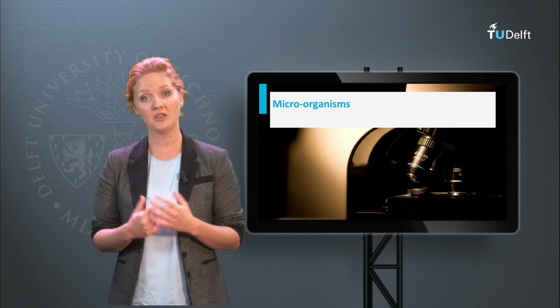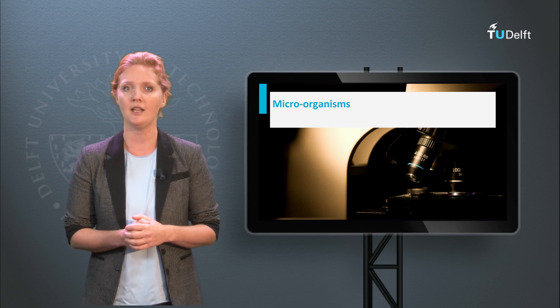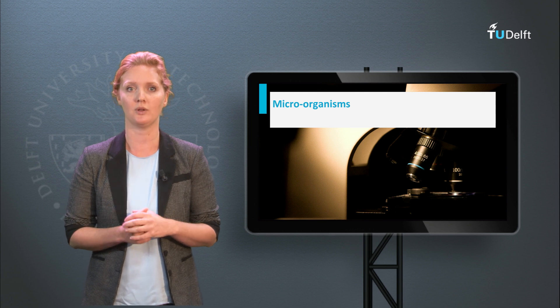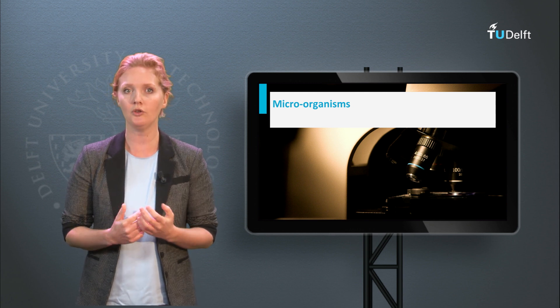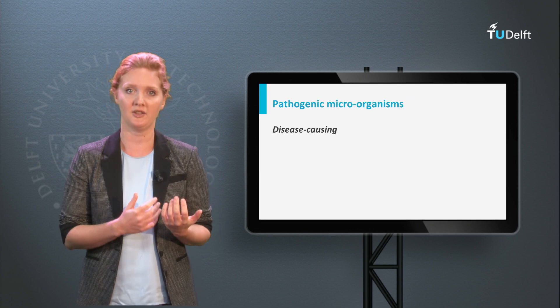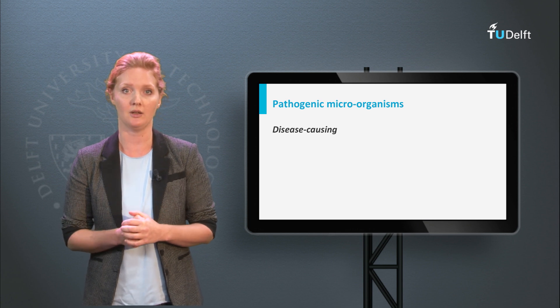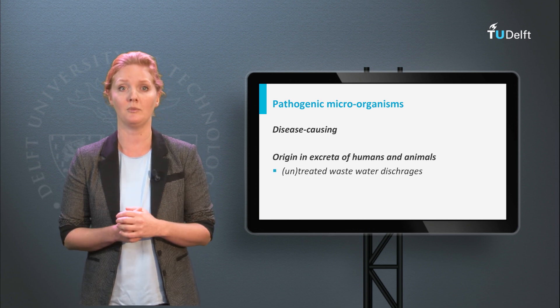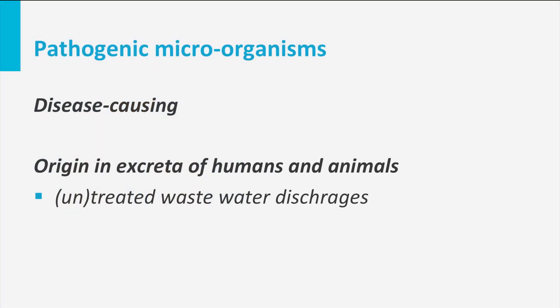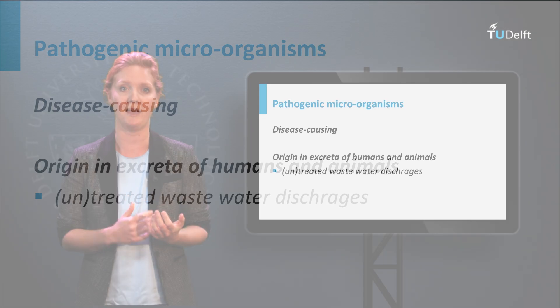Smaller microorganisms such as bacteria can also be abundantly found in water, and the majority of them does not affect your health. However, there are also microorganisms that are harmful to human health — the so-called pathogenic microorganisms. Pathogens are not present in water by nature, but they enter the water through feces and urine from humans and animals. Pathogens have difficulty surviving in natural water because the temperature is lower than body temperature. An important source of pathogens in surface water is the continuous supply of untreated or not fully treated wastewater from domestic and bio-industry.